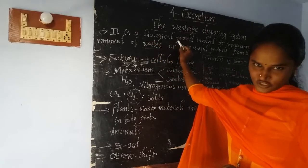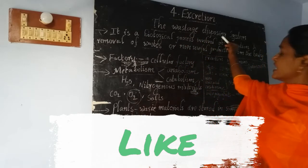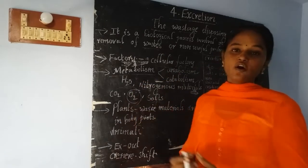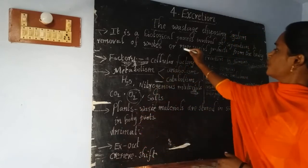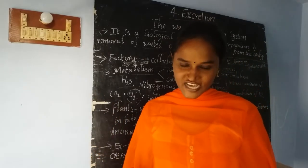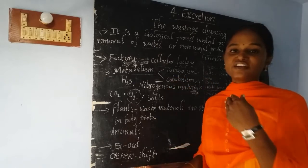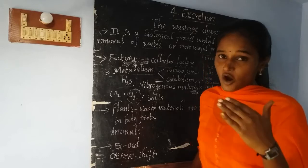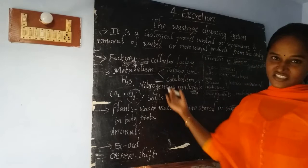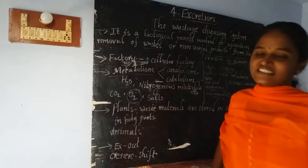Excretion is a biological process involved in the separation and removal of waste, or non-useful products, from a living organism's body. This process is also called the waste disposing system.